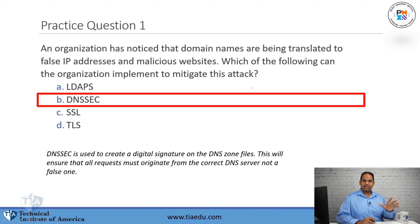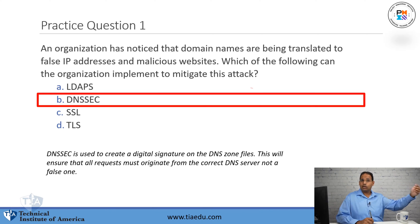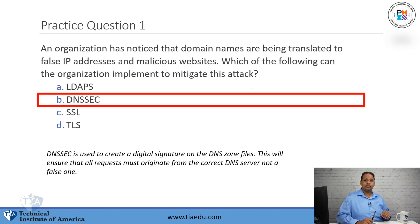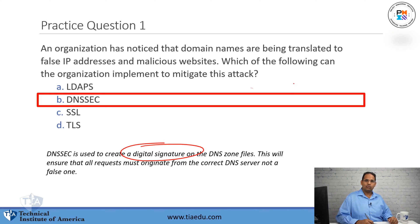What DNSSEC does is sign the DNS zone file, so that when people request queries to find out what IP address a domain name resolves to, we know it's actually coming from that particular DNS server. What could be happening in this attack is an attacker intercepting the traffic and sending false IP addresses that appear to come from the actual DNS server. If the DNS server digitally signs their zone files, no one can impersonate that DNS server.